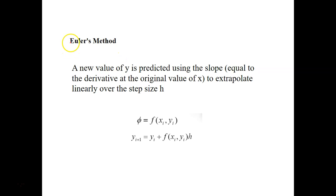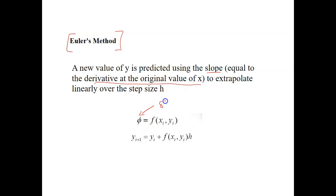The first method is what we call Euler's method. We are predicting a new value of y using the slope. The slope here is actually the derivative at the original value of x — meaning dy/dx — to extrapolate linearly over the step size h. So we predict a new value of y equals the old value of y plus the slope, or dy/dx, times the step size.